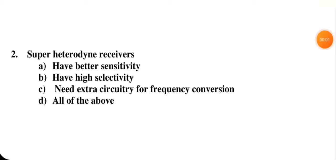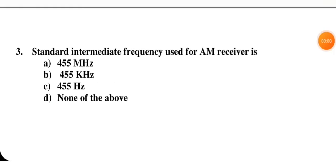Next question: super heterodyne receivers — have better sensitivity, have high selectivity, need extra circuitry for frequency conversion. So all of the above is correct, meaning D is the right option for this question.